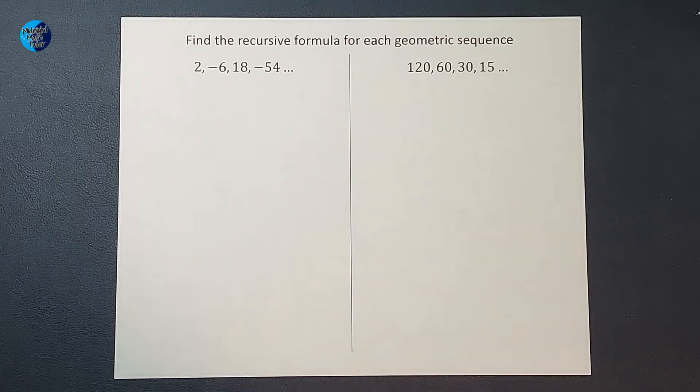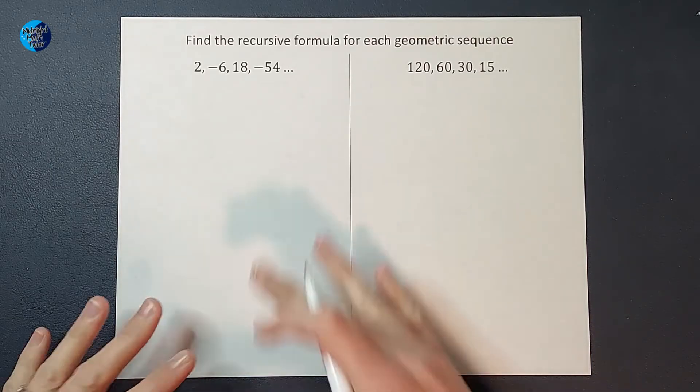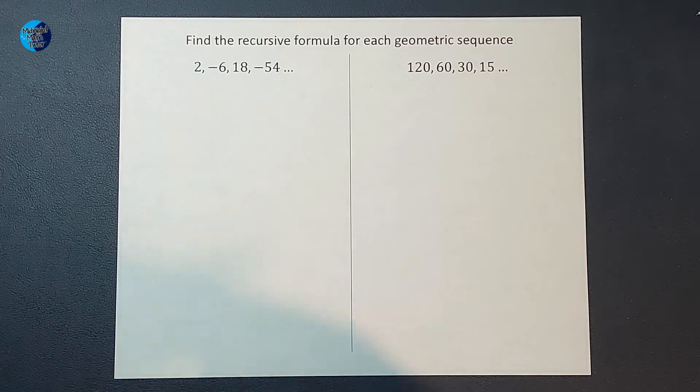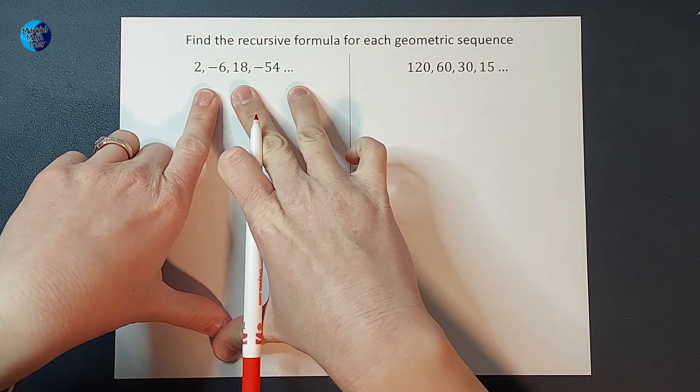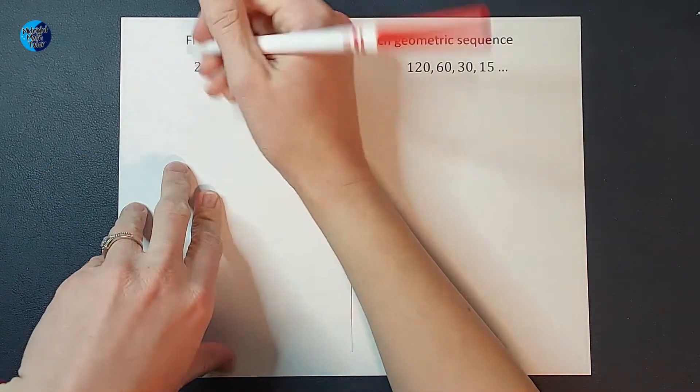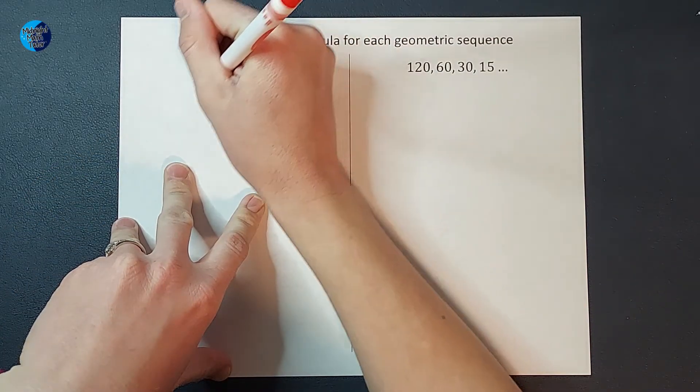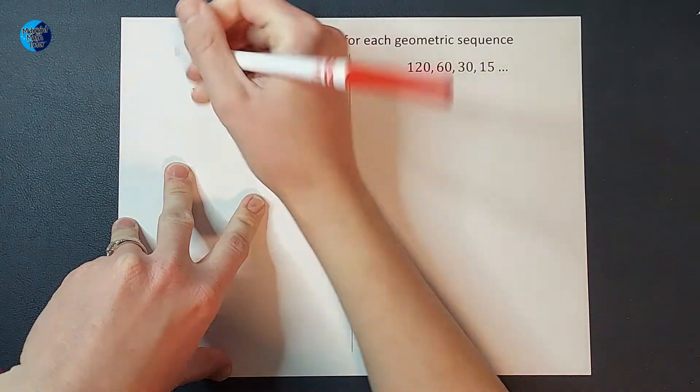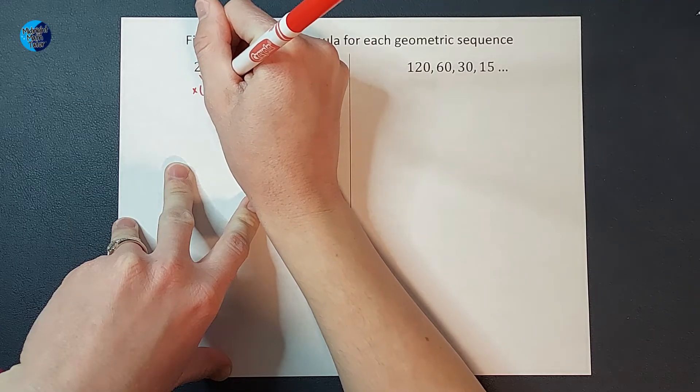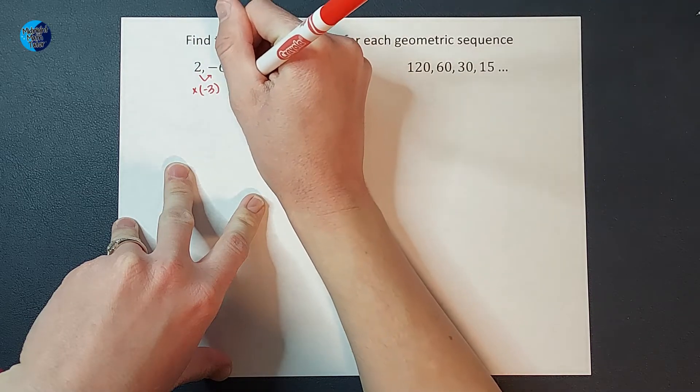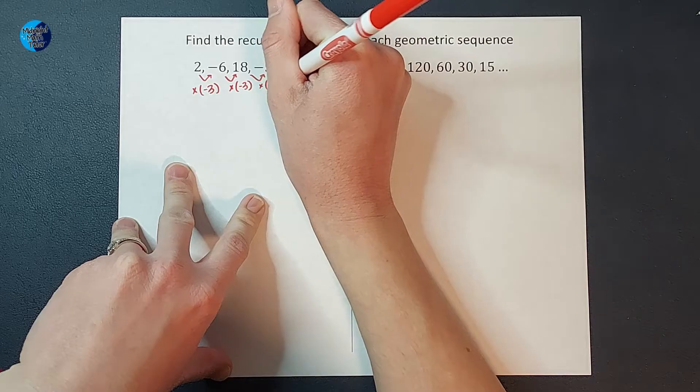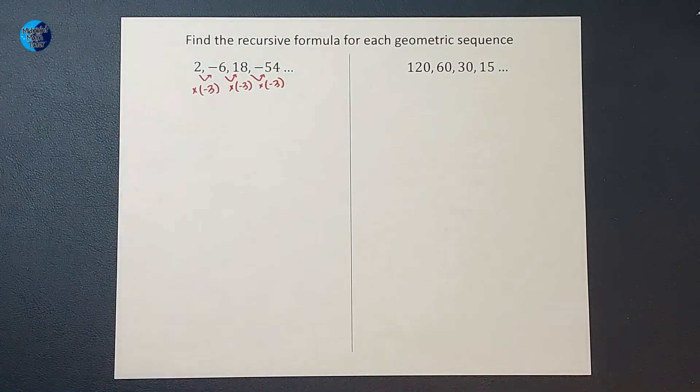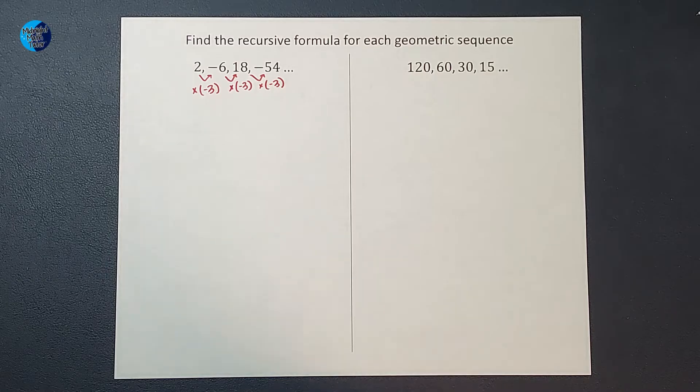Now the first thing I want to do is figure out the pattern between these numbers. They're not just randomly listed, there's some sort of pattern here. So when I look at this one, I notice that we are multiplying by negative three each time. You're like, great, now what? There's just a little bit of terminology we need to go over and then it falls together pretty quickly.